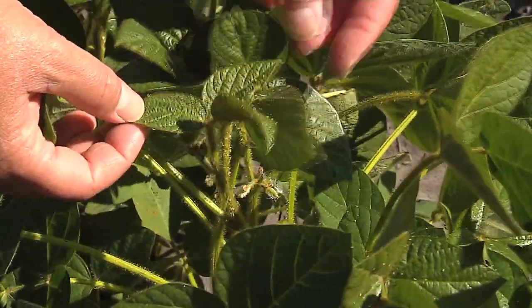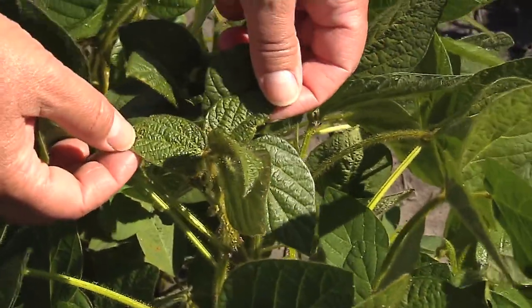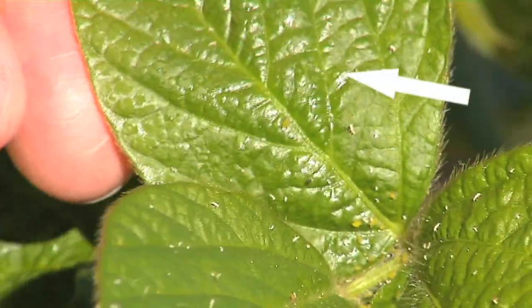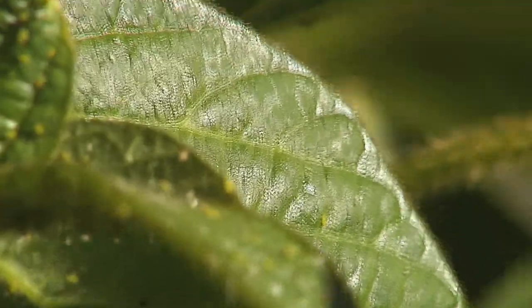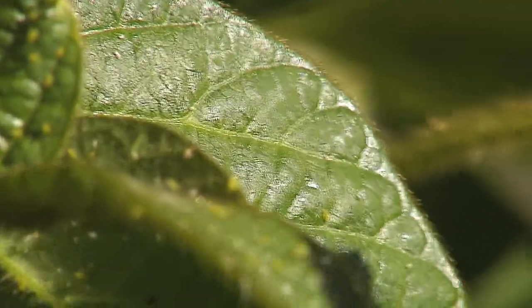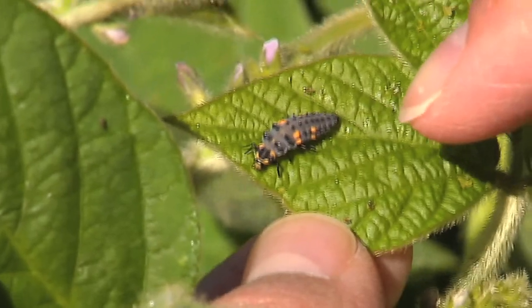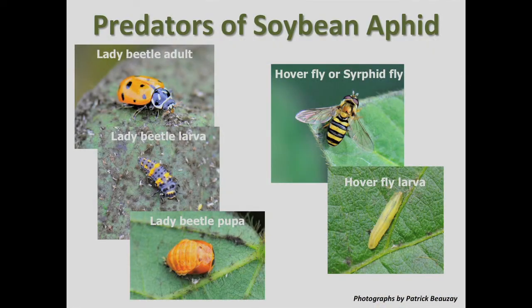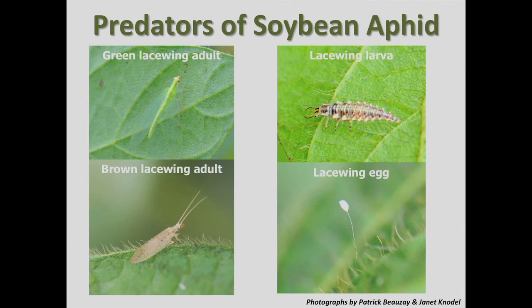and only count the yellow alive aphids for estimating your numbers. Another thing to note in the field is honeydew — you can see the glossy material, and that's honeydew that the aphids excrete. You can also look for predators such as this lady beetle larvae that feeds on the aphids. Other predators include syrphid flies and larvae of the green and brown lacewings.